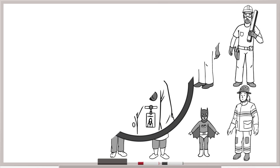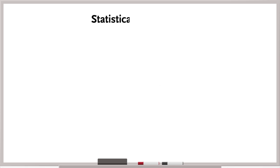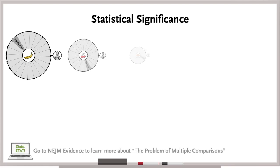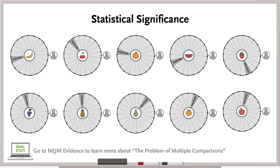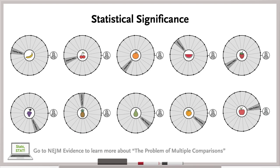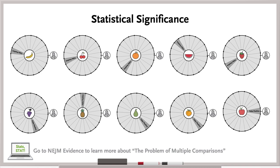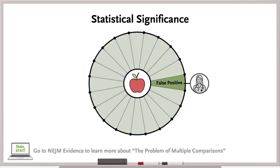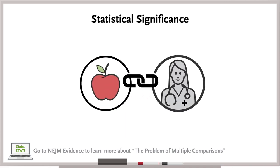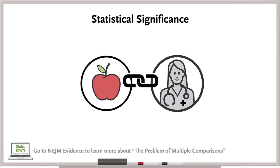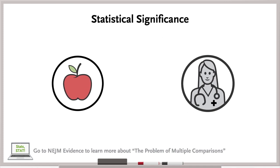Second, subgroup analyses require us to reconsider statistical significance. The more subgroup analyses performed, the more statistical testing involved, which increases the likelihood of getting a positive result from chance alone. A subgroup analysis may therefore detect an association between apple eaters and number of primary care visits, when in fact no association exists.